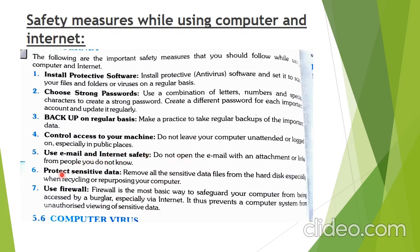Use a firewall. A firewall is the most basic way to safeguard your computer from being accessed by unauthorized users. Always keep your firewall on so no one can access your personal information. There are two types: software firewall and hardware firewall. A software firewall prevents the computer system from unauthorized persons viewing sensitive data.